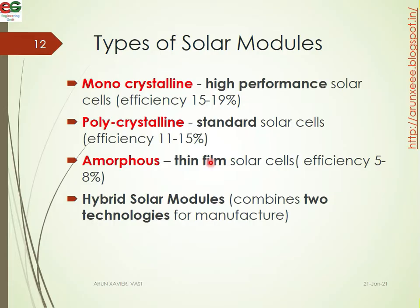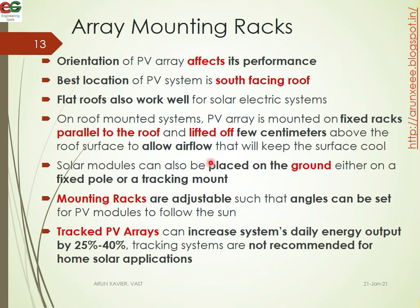Hybrid solar modules combine two technologies. The next component is the array mounting racks. The orientation of the PV array affects its performance. The best location for a PV system is a south-facing roof. Flat roofs also work well for solar electrical systems. On a roof mount system, the PV array is mounted on a fixed rack parallel to the roof, lifted a few centimeters above the roof surface to allow air flow and keep the modules cool.